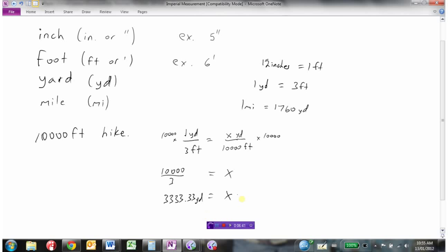Now I need to convert the yards into miles. I have one mile equals 1,760 yards, and I want to know how many miles is 3,333.33 yards. So 1 is to 1,760 as x is to 3,333.33. Make sure your units are in the same order: miles on top, yards in the denominator. To isolate x, I just need to multiply both sides by 3,333.33.